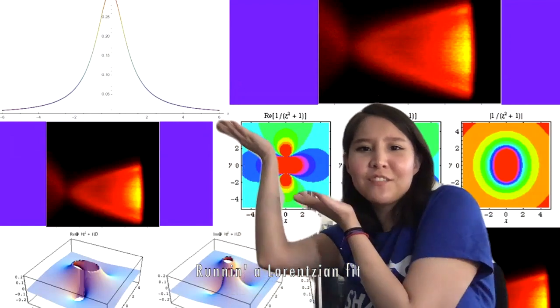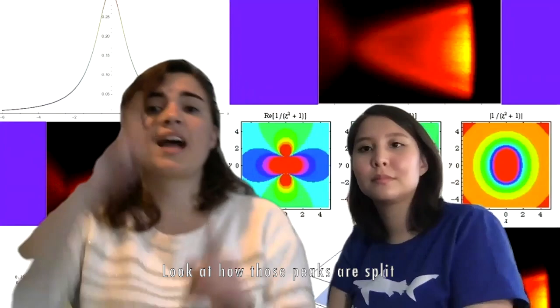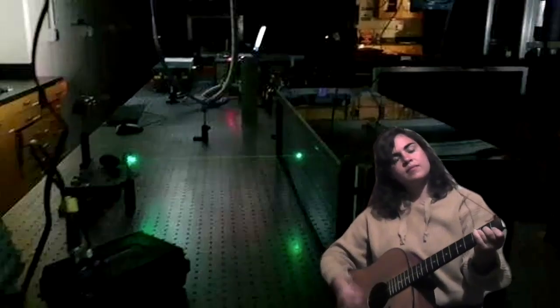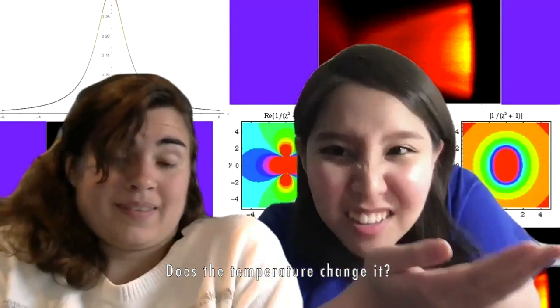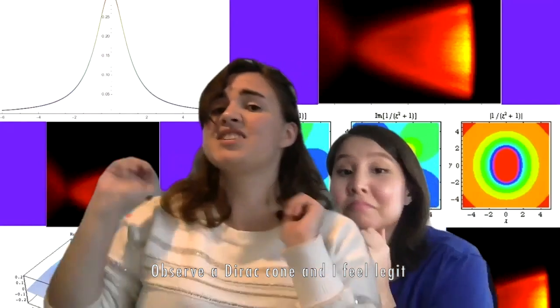Running the Lorentzian fit, look at how those peaks are split. As the temperature changes, you can observe Dirac cones, holding up a logon.